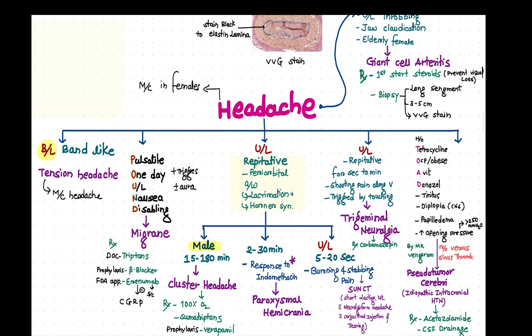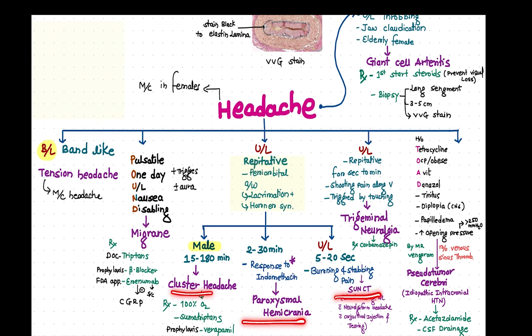Now let's use a simplifying chart for headache. If bilateral — tension headache. If unilateral, pulsatile, with nausea/vomiting and triggering factors — migraine. If unilateral, periorbital, with lacrimation and Horner's syndrome, repetitive — it can be cluster headache, paroxysmal hemicrania, or SUNCT. If there is excruciating pain along the trigeminal nerve — trigeminal neuralgia. If the patient presents with tinnitus, diplopia due to raised intracranial pressure, and papilledema — pseudotumor cerebri.